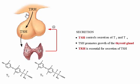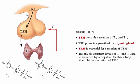A particular level of thyroid hormone seems to be required for many normal physiological processes. Thyroid hormone modulates physiological processes, but does not initiate them. Relatively constant levels of T3 and T4 are maintained by a negative feedback loop that inhibits secretion of thyroid-stimulating hormone.